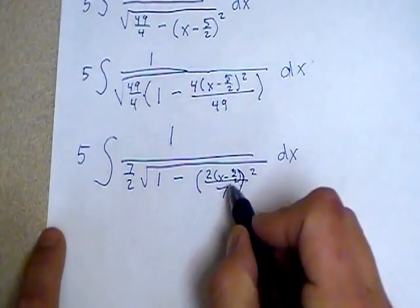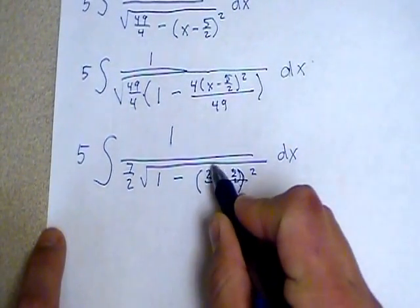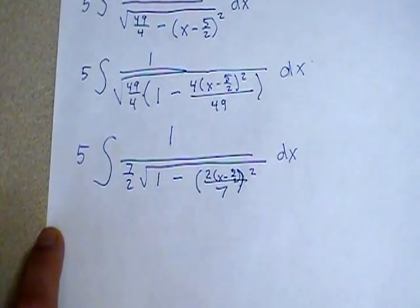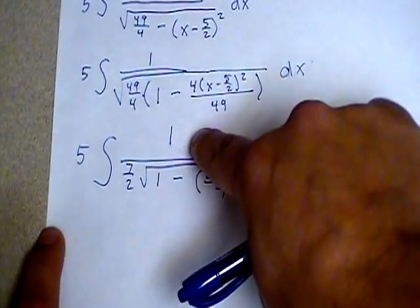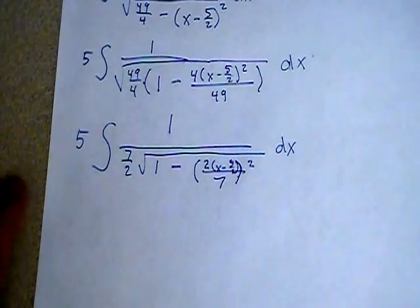But if I let u equal what we have inside this set of grouping symbols that's being squared, since what's inside of this set of grouping symbols is linear, its derivative is going to be a constant and we don't need to have any x's up here to cancel with what we pick up when we attempt to do our substitution.